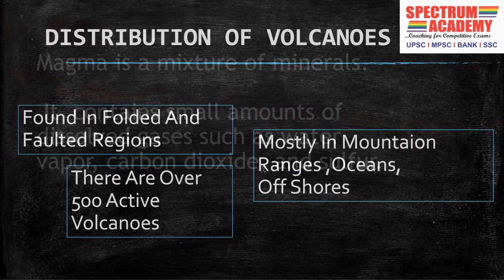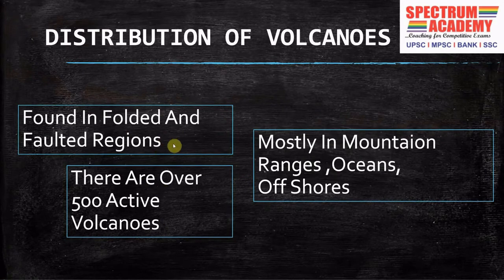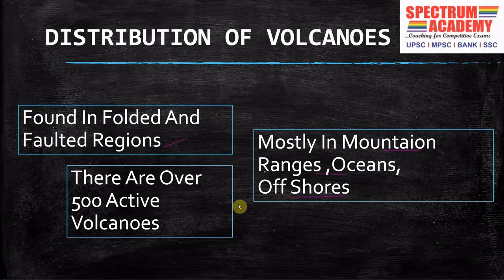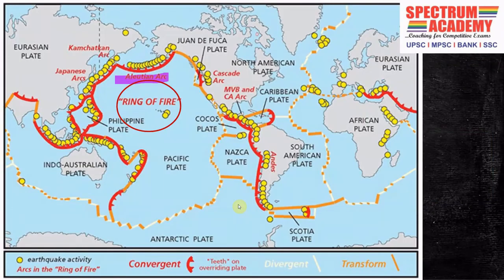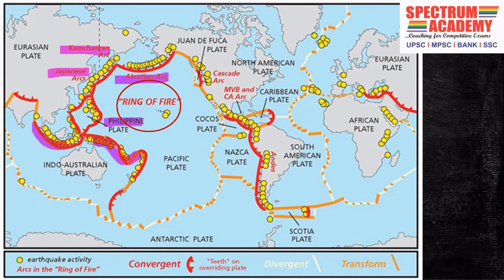Volcanoes are found in a pattern in regions that are folded or faulted. They mostly occur in mountain ranges, oceans and offshore areas. One of the most active areas is the circum-Pacific region — the Pacific Ring of Fire — where two-thirds of the world's volcanoes occur. The areas include Kamchatka, Japan (which has 35 active volcanoes), Philippines (over 100 active volcanoes), Indonesia, Pacific islands of Solomon, Tonga, New Hebrides, North Islands, New Zealand, and from the Andes to Central America and from Mexico to Alaska.